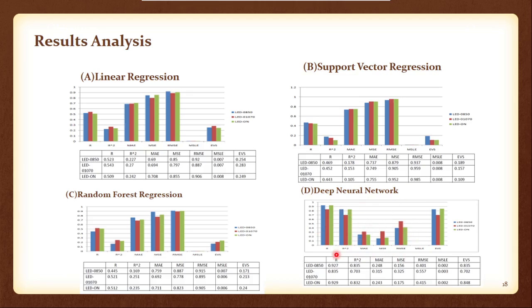And again if we look closely, this LED 850 for which the r is the maximum 0.927, and also the r square is maximum 0.835. So I can say the combination of LED 850 with Deep Neural Network gives the best performance.